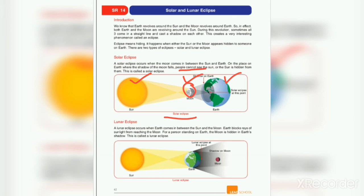A lunar eclipse occurs when Earth comes in between the sun and the moon. When Earth comes between the sun and the moon, Earth blocks the rays of sunlight from reaching the moon. For a person standing on Earth, the moon is hidden in Earth's shadow. You can see in the picture that the moon is completely hidden — this is a lunar eclipse.